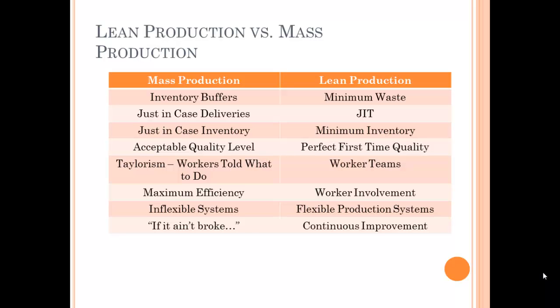Let's make a comparison of mass production versus LEAN production. In mass production, you have inventory buffers because there's going to be waste and defects. In LEAN production, you have minimum waste, so there are no inventory buffers. Mass production uses just-in-case deliveries, while in LEAN you have just-in-time — that part is going to arrive right at the time you need it.